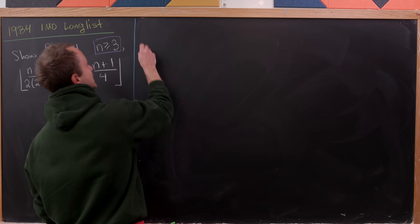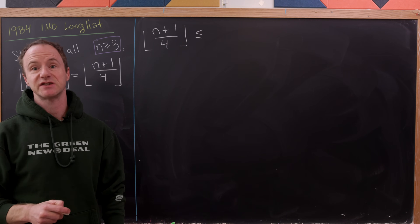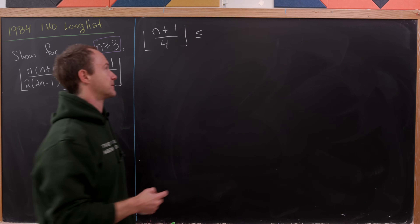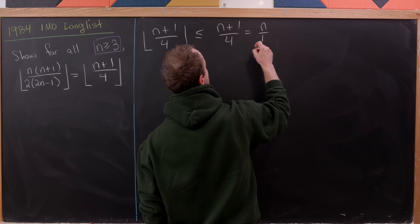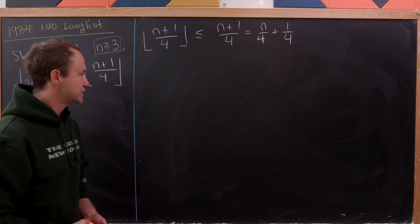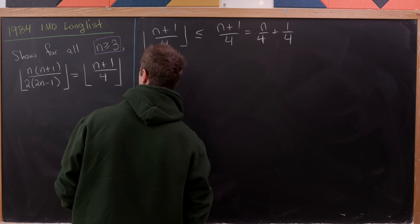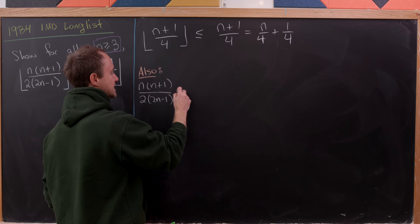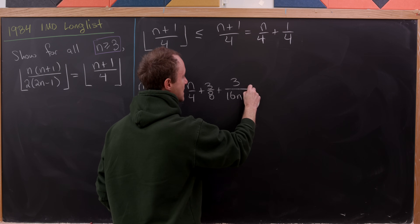Let's start with the right-hand side: the floor of n plus 1 over 4. The floor can only make things smaller — it's an elevator down to the closest integer — so this is less than or equal to n plus 1 over 4, which equals n over 4 plus 1 over 4. Now let's perform a straightforward calculation on the argument of the floor on the left-hand side. We observe that n times n plus 1 over 2 times 2n minus 1 equals n over 4 plus 3 over 8 plus 3 over 16n minus 8, just by doing polynomial long division.